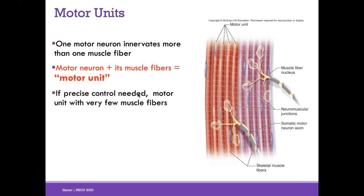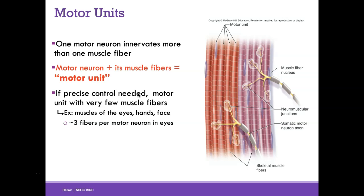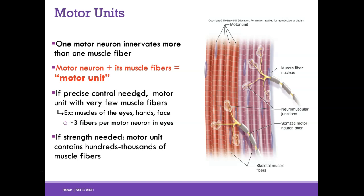Different types of muscles have different numbers of motor units and muscle fibers. For precise movements like the eye, one motor neuron may interact with only three muscle fibers for very fine, delicate control. For strength — like the quadriceps — one motor neuron can contain hundreds to thousands of muscle fibers, so stimulating just one motor neuron activates up to a thousand fibers at once. For strength, a motor unit contains many muscle fibers; for precise control, far fewer. There are about a thousand muscle fibers per motor unit in the calf.